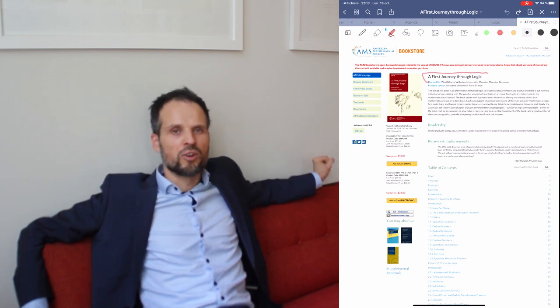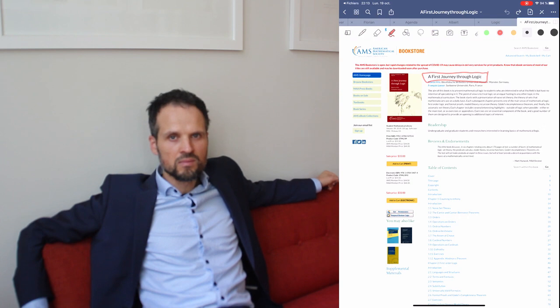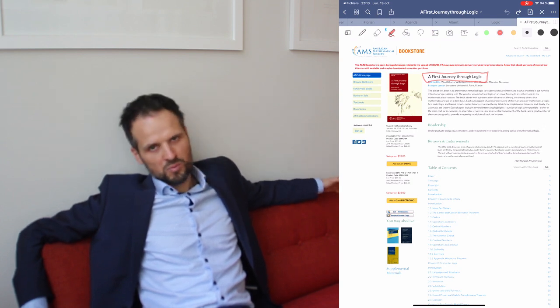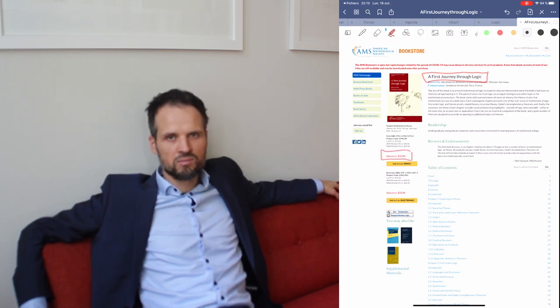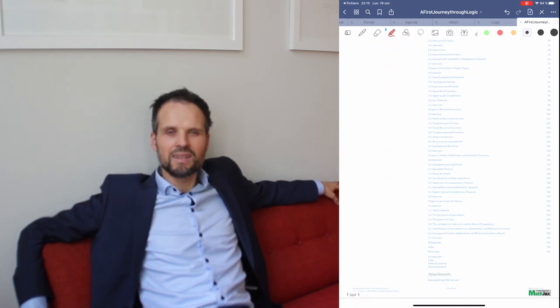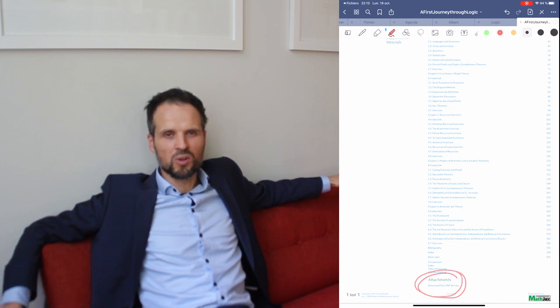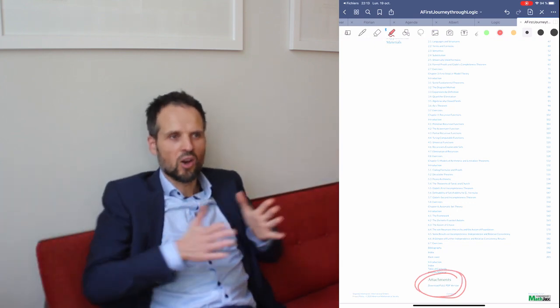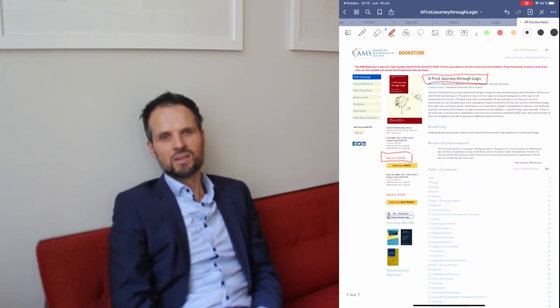There is also a new beautiful textbook on the topic. It is called A First Journey Through Mathematical Logic and it is written by Martin Hills and François Leuser, published by the AMS. It costs 33 dollars and I can really recommend this book. It provides a neat and optimized access to the subject.